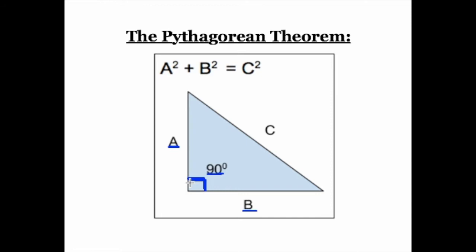There's one more thing we should know about right triangles. The little box-type thing indicates a 90-degree angle. The side directly across from the 90-degree angle — which in this case is our side C — is the largest side of our triangle. That side is called the hypotenuse. The hypotenuse is the largest side of the right triangle, and it is the side across from the 90-degree angle. So side C here is our hypotenuse.